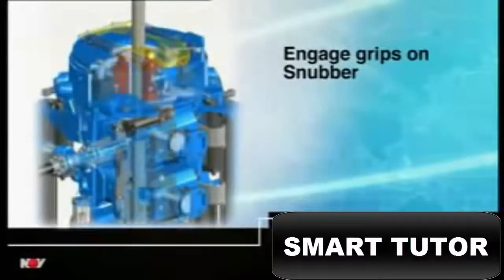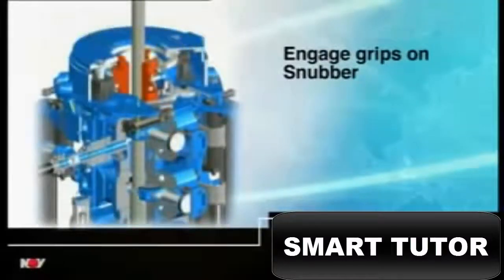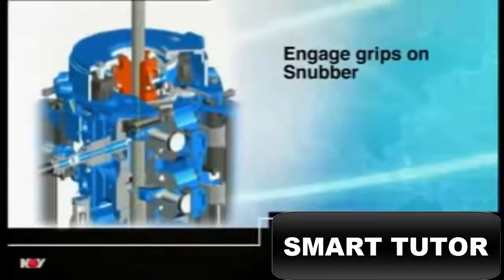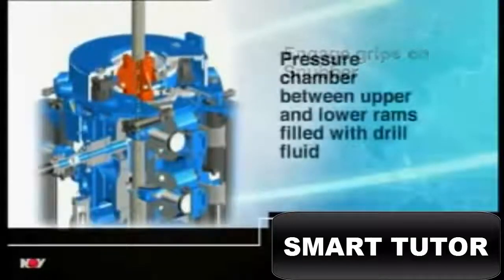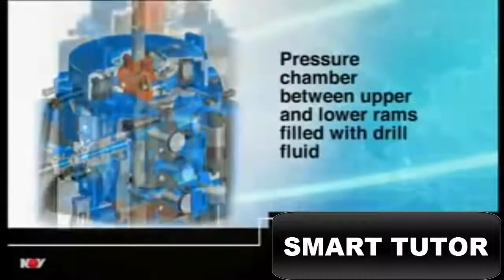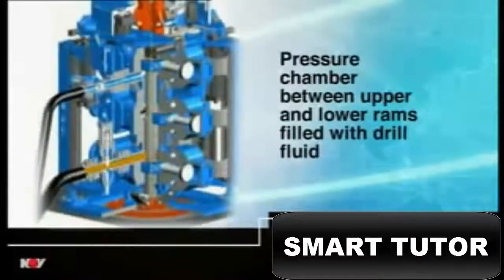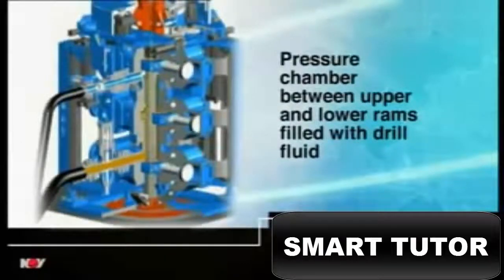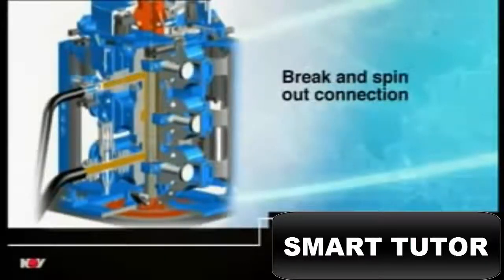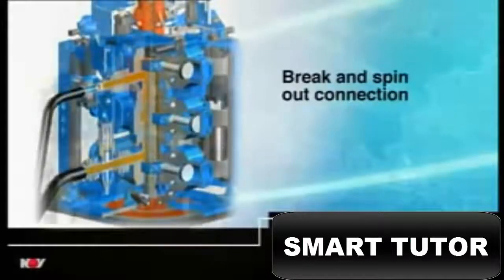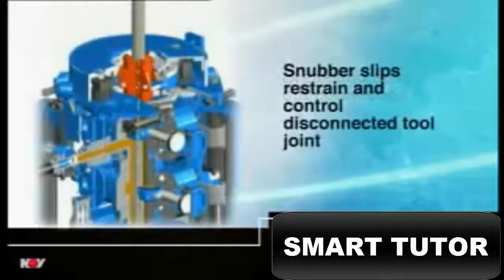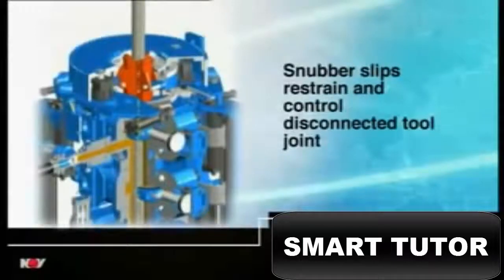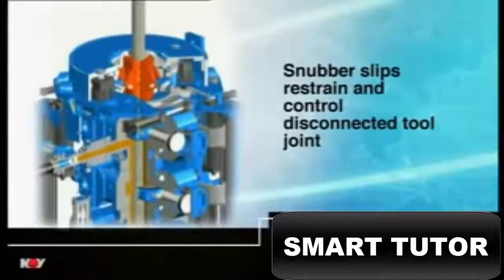At this point the grips in the snubber are engaged on the saver sub above the tall joint. The pressure chamber created between the upper and lower pipe rams is opened to the diverter manifold and filled with drilling fluid at circulating pressure. The connection is broken and spun out by the hydraulic motors in the snubber which simultaneously restrains and controls the upward movement of the disconnected tall joint against the force exerted by the circulating pressure inside the pressure chamber.